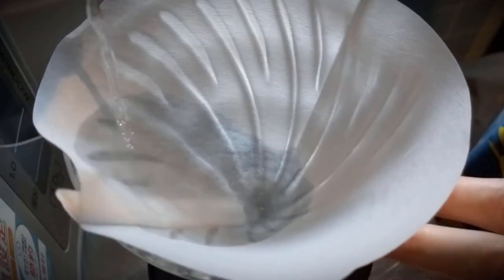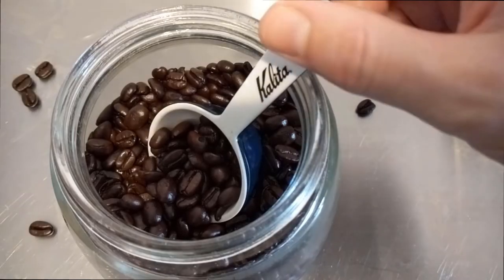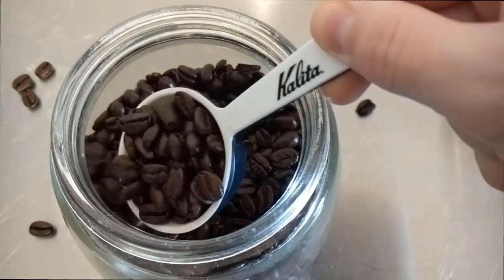First, put the paper filter into the dripper and wet the filter. This helps keep it in place. Then I scoop out about 20 grams of beans and put them in my coffee grinder.